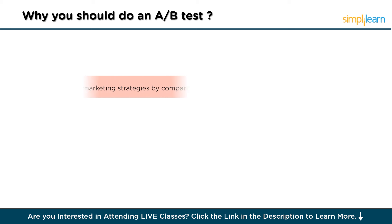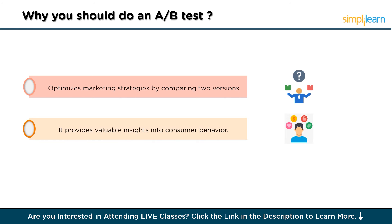Why should you do an A-B test? A-B testing is employed by businesses to optimize their marketing strategies and enhance overall performance. By comparing two versions of a web page, email, advertisement, or any other marketing asset, A-B testing allows companies to scientifically evaluate which variant resonates better with their audience. This method provides valuable insights into consumer behavior, preferences, and trends.